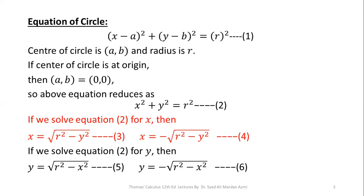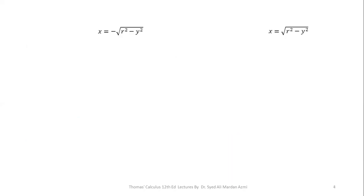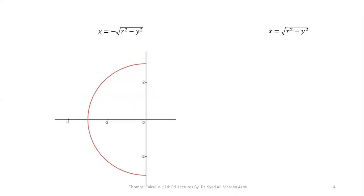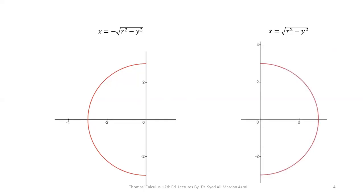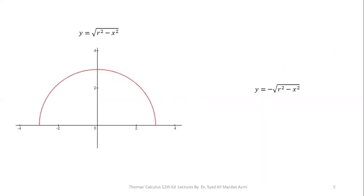Now we will learn which part of the circle is represented by each equation. x = -√(r² - y²) is a circle in the left half-plane with center at the origin and radius r. x = √(r² - y²) is a circle in the right half-plane with center at the origin and radius r. y = √(r² - x²) is a circle in the upper half-plane with center at the origin and radius r.